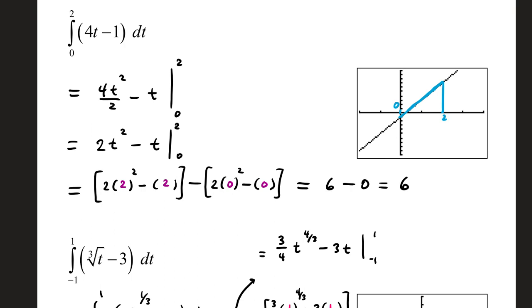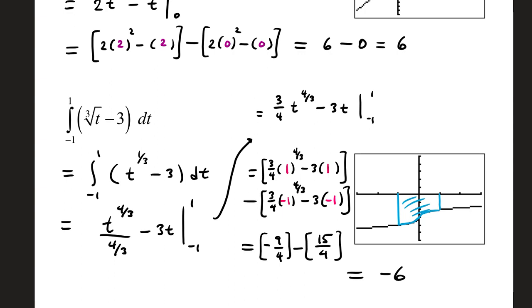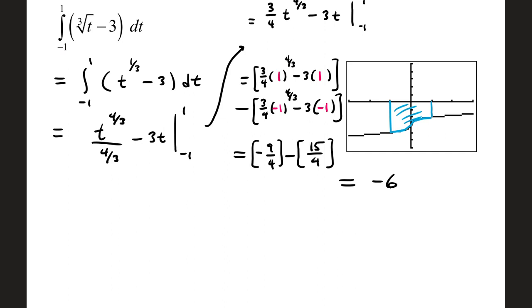On the second example, we found the definite integral of negative 1 to 1 for the cube root of t minus 3 dt. So let's start with the antiderivative. Remember that a radical can be written with a fraction exponent. Specifically, cube root can be written with a power of one-third. Minus 3 stays the same.